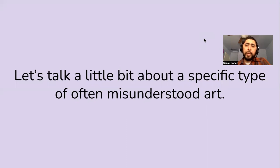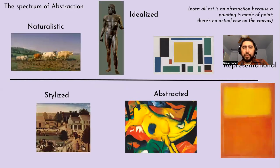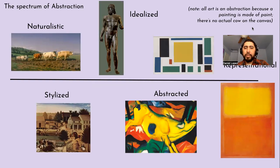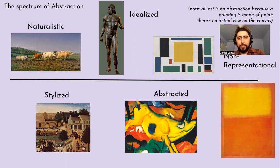We're going to start off by talking about abstract art. Let's define what abstract art is, more or less. Abstraction, as you can see here, is a spectrum from left to right — left being naturalistic, on the right being non-representational.